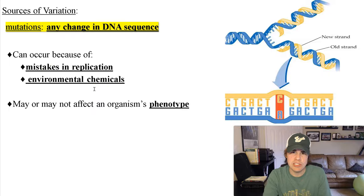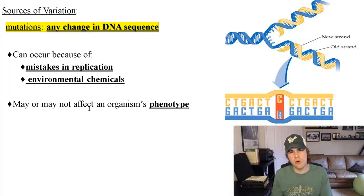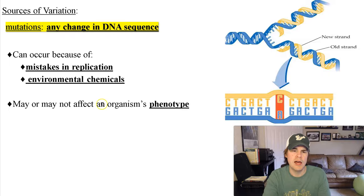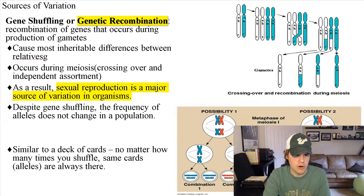Most mutations are neutral or bad — they don't help an organism; usually they don't do anything good or bad, and most of the time they're bad. But a few of them would confer an advantage. This raises the argument: how could all these beneficial mutations happen over all these years if the majority of mutations we see today are not good for organisms?